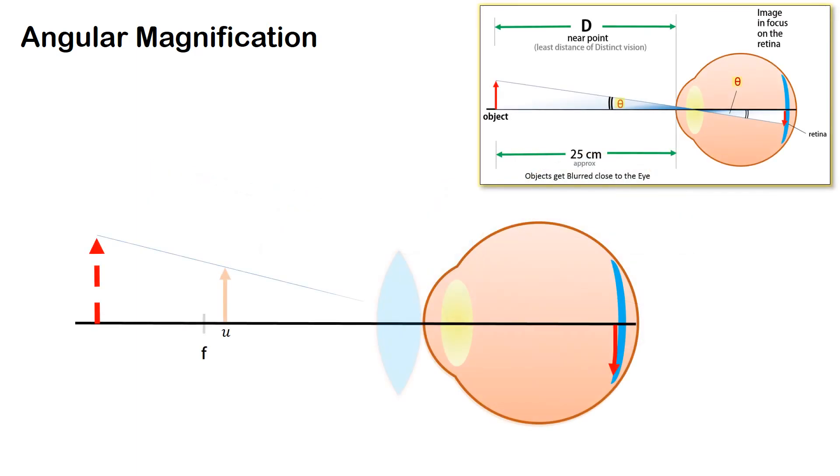Now let's consider two situations. In the first situation we have the object kept at 25 cm or at near point from the eye, and in another case we keep a lens between the eye and the object and the object is kept between the focal length and the lens such that the virtual image is formed at the near point or distance d from the eye.